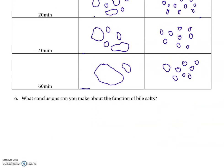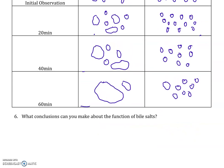What conclusions can you make about the function of bile salts? They work as emulsifiers — they keep the oil droplets suspended in water, and in doing so they create more surface area for the digestive enzymes to work on.